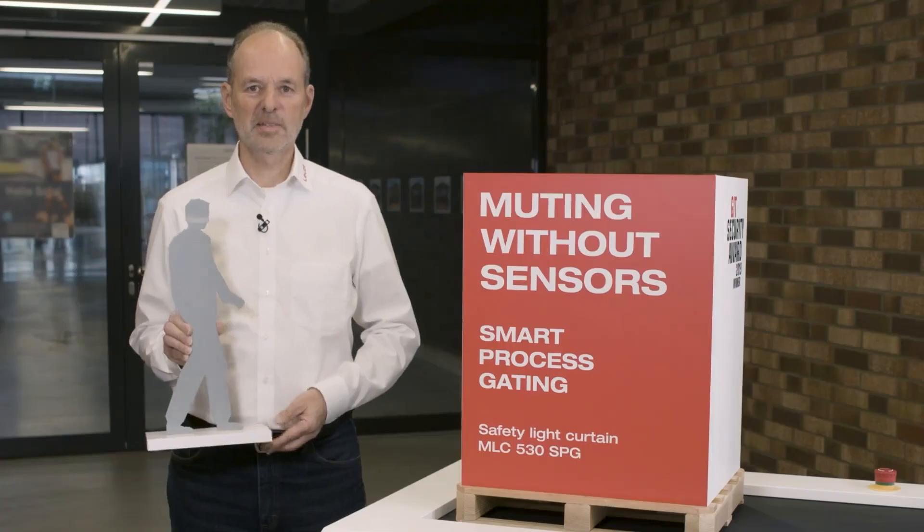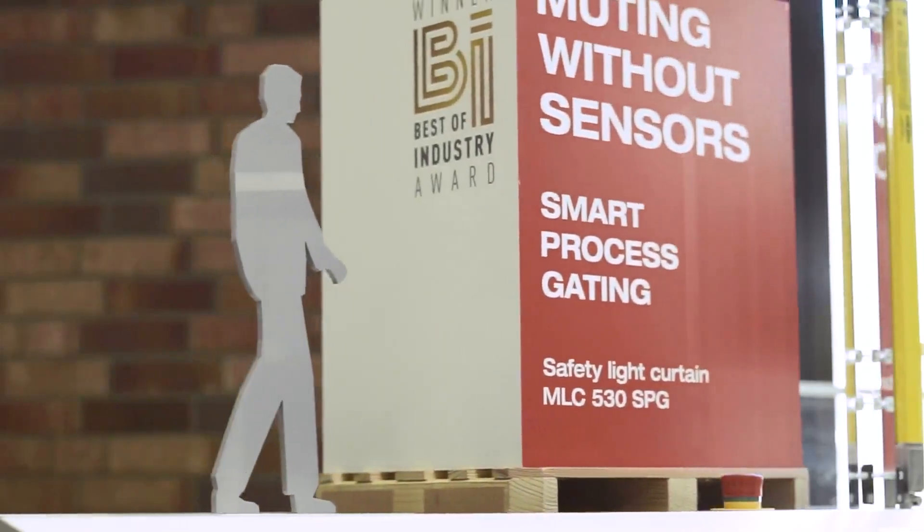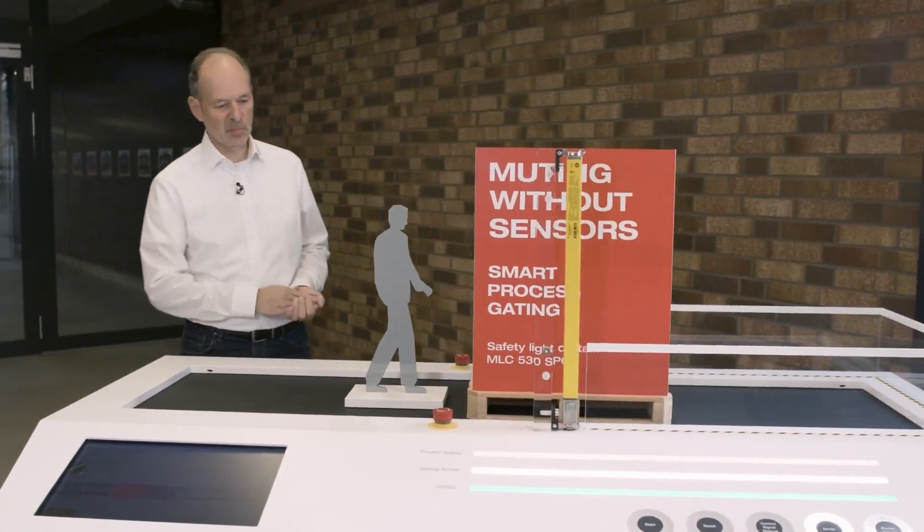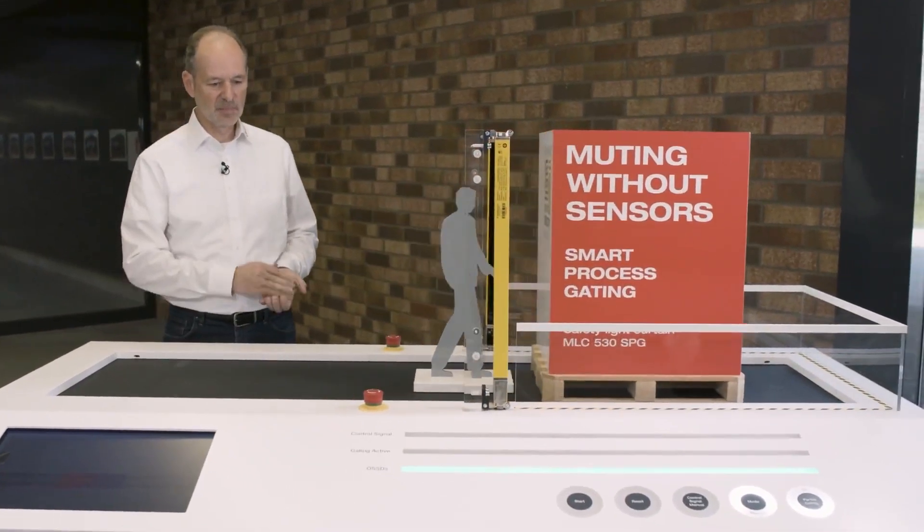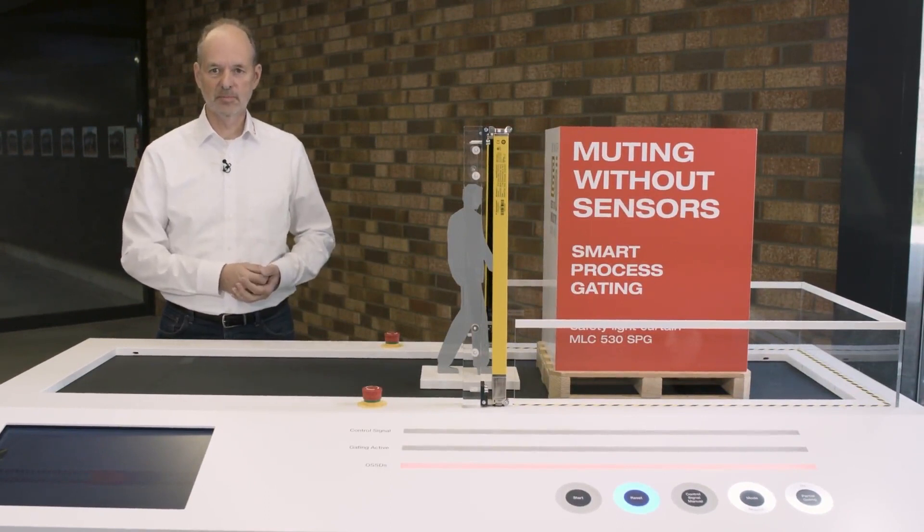What happens when a person tries to enter the danger zone? That's what we're going to simulate here. In this case, Smart Process Gating recognizes the person. The safety switching outputs switch off and the system comes to a stop.